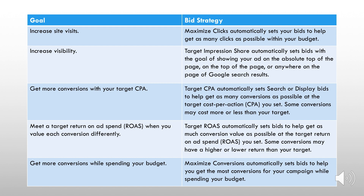Then there is target CPA — target cost per acquisition. That doesn't mean you will be paying Google on an acquisition basis. Google asks you: what is your target CPA? What cost per acquisition do you want to target, and how much amount do you want to spend to get a conversion? To get more conversions, you'll probably have to spend more.